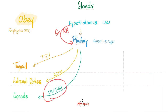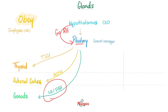FSH and LH go to the gonads. In females, the gonad is the ovary, and it secretes estrogens and progesterone. In males, the gonad is the testis, and it secretes testosterone and the more potent dihydrotestosterone. These are known as androgens, or male hormones.